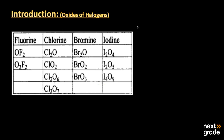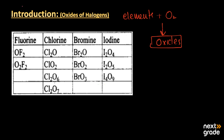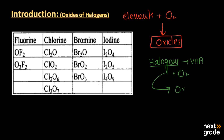Assalamualaikum, my dear students. Today we are going to discuss the oxides of halogens. Basically, oxides are the products formed when elements react with oxygen. Likewise other elements, halogens — which are group seven elements — also react with oxygen to form products called oxides of the halogens. There are four types of halogens we will cover here.